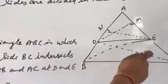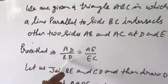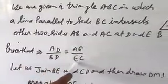We need to prove that AD upon BD equals AE upon EC.